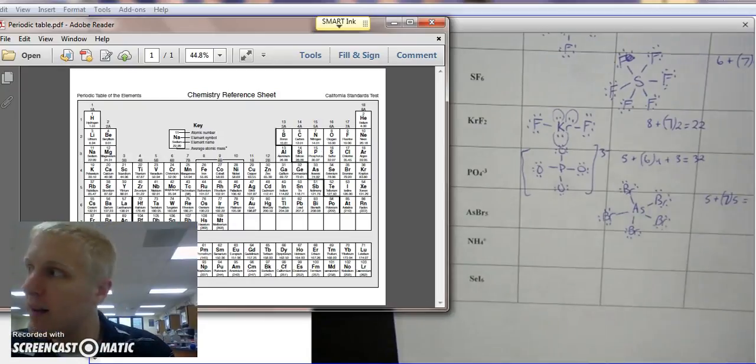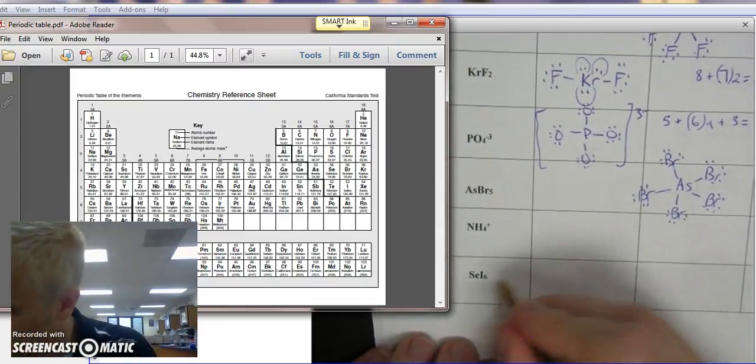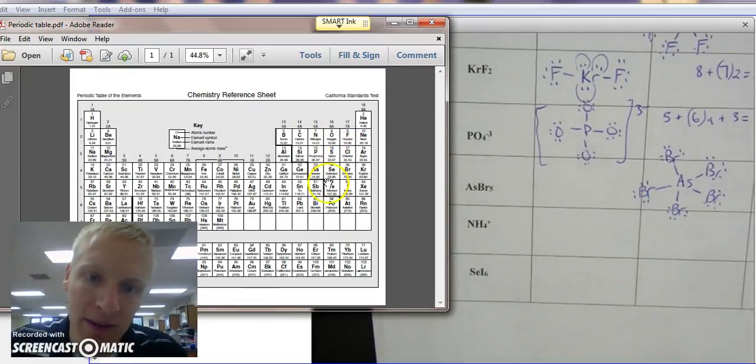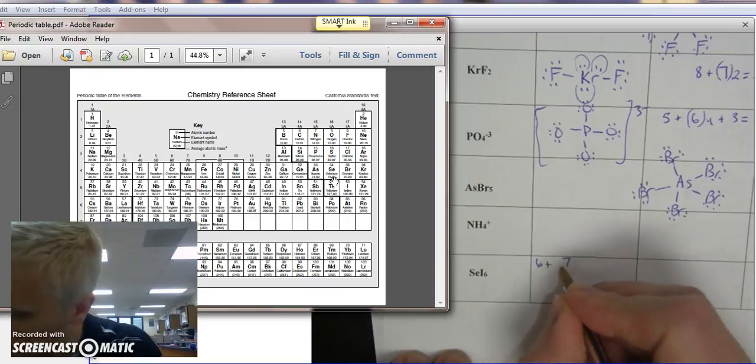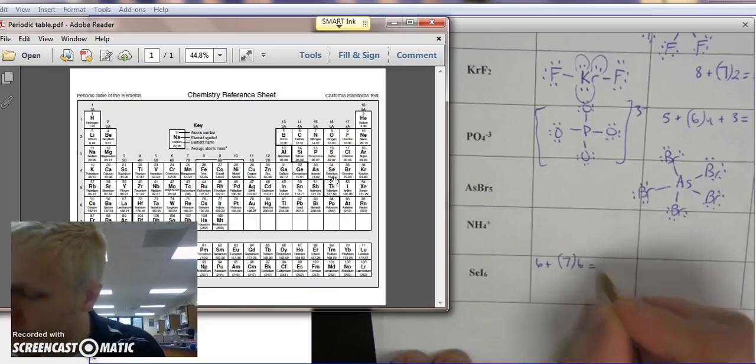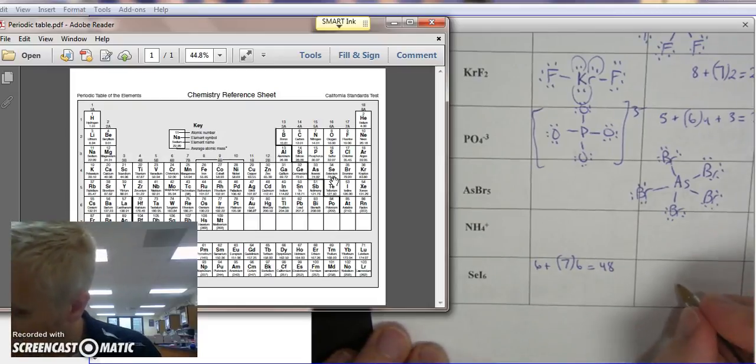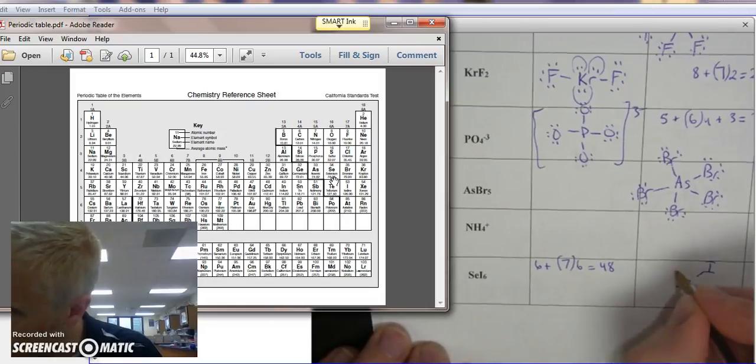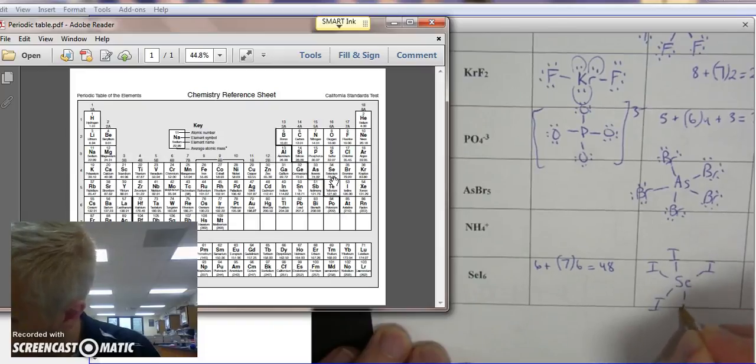All right, and doing one last one, let's put this in better focus. SeI6. So Se is selenium, same column as sulfur and oxygen, it has 6 outer electrons. And iodine has 7, it's a halogen, there's 6 of them. 6 times 7 is 42, plus 6 is 48. So for this one, we have selenium in the center, it's in least supply. Iodine.